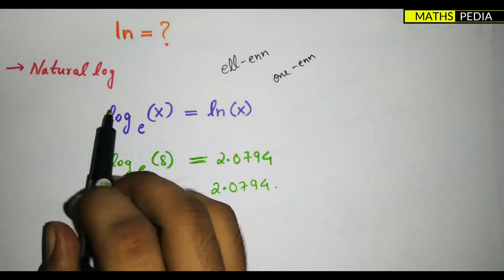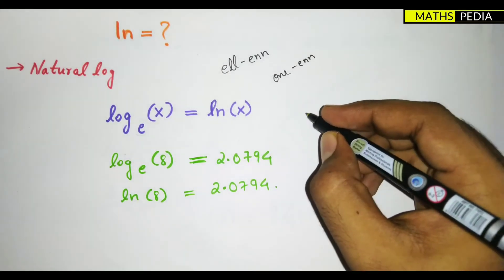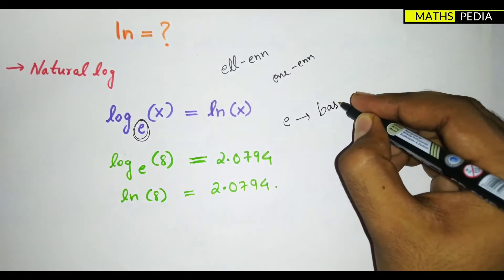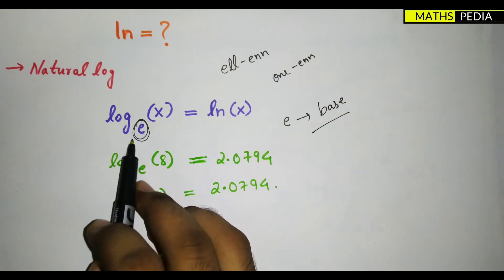You can observe here, this is a general case. Log, whenever the base becomes e, whenever this base becomes e, then we call it as natural log. Remember, log base e of some function, whenever I do this part, I'll get it as ln of that.